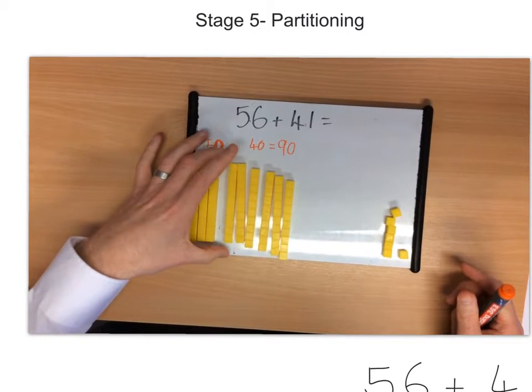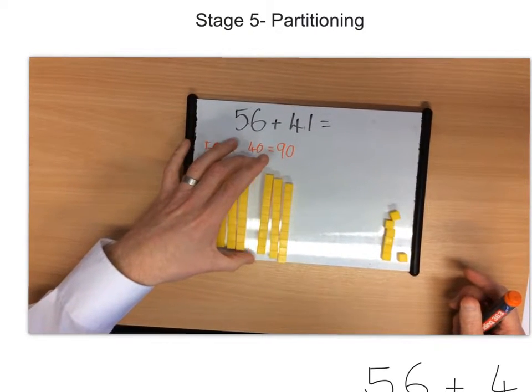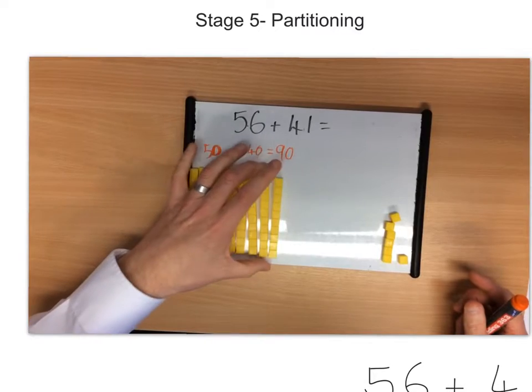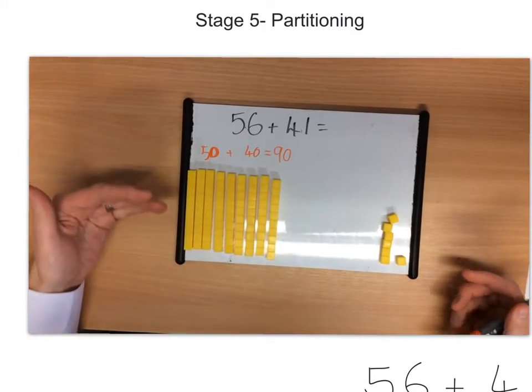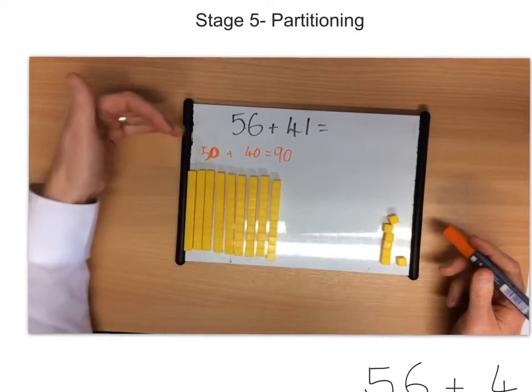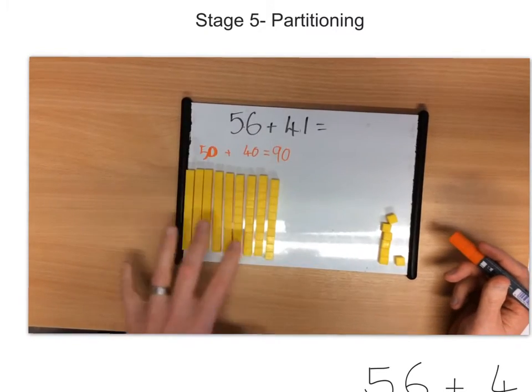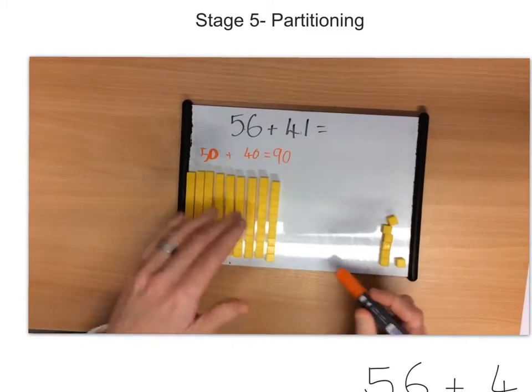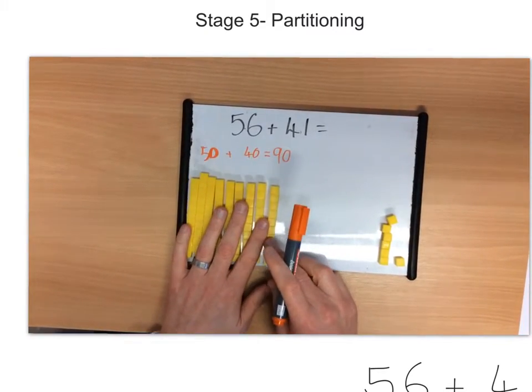10, 20, 30, 40, 50, 60, 70, 80, 90. Really important to check. That's what we encourage children to do. If they think they know the answer, write it down, but then check with the resources and it becomes more confident. So, the first part, 50 plus 40, gives us 90.